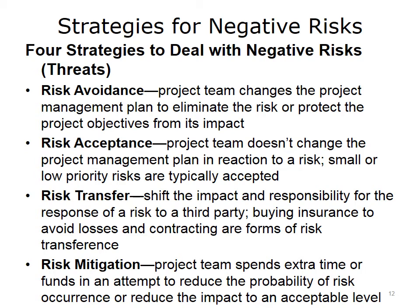There are also four strategies for managing negative risk. Risk avoidance requires the project team to change the project management plan to eliminate the risk or protect the project objectives from its impact. With risk acceptance, the project team chooses not to respond to the risk threat and does not change the project management plan — small or low priority risks are typically accepted. Risk transference involves shifting the impact and responsibility for the risk response to a third party; insurance is a good implementation, and you may also secure guarantees, contracts, and warranties. Risk mitigation involves reducing the probability of the event's occurrence or reducing its impact if it does occur.